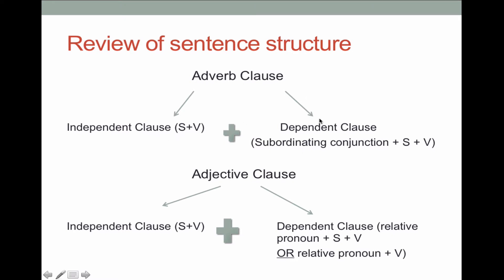An adjective clause is kind of built the same way, in the sense that we have an independent clause and we also have a dependent clause. However, instead of a subordinating conjunction, we have a relative pronoun plus a subject plus a verb — or a relative pronoun plus a verb. I'll explain why we have two options in just a moment.